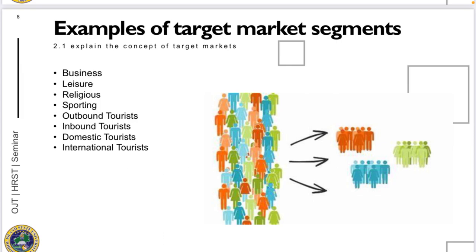Examples of target market segments include business travelers. One type is the FIT — Free Independent Traveler — who arranges their own accommodation. There are also members of a corporation that has a special rate with an organization, and conference or event guests within a hotel. Another example is the leisure segment, which includes FITs who arrange their own accommodation, tour groups, honeymooners, families, and the elderly.